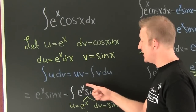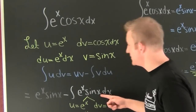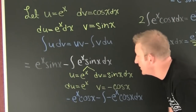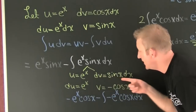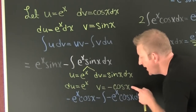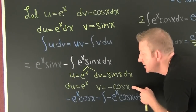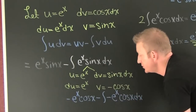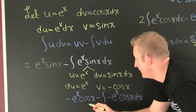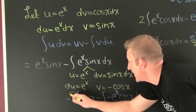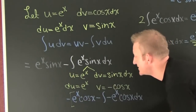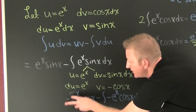Minus this integral: e to the x sine x dx. Here again we've got to do integration by parts. I'm going to let u be e to the x and dv be sine x, so that makes du e to the x and v minus cosine x. I throw them into this form. That minus is coming from v.